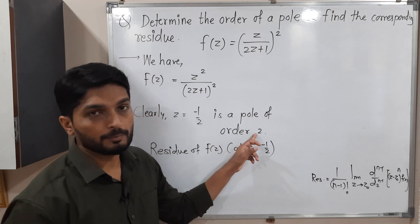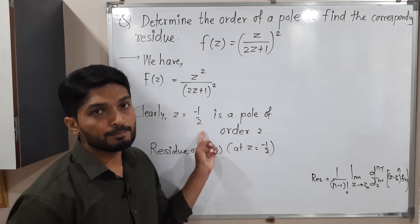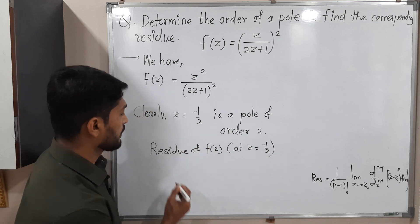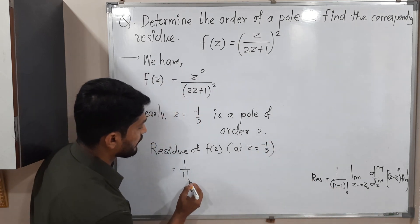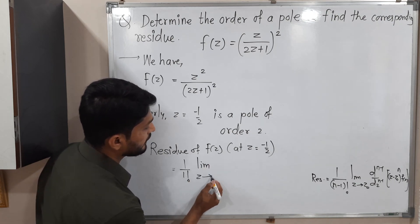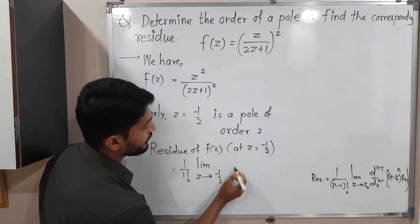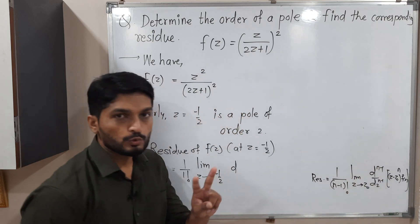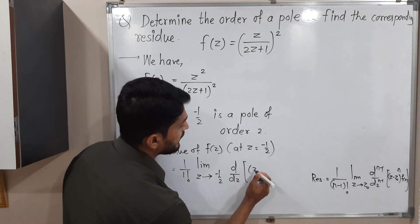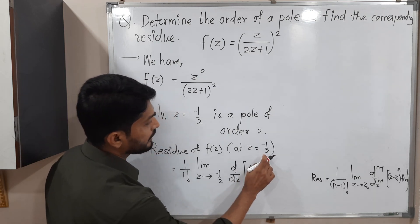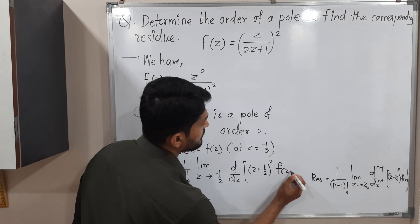So now the question is: what is n? n means its order, so here the value of n is 2, and z₀ is our pole, which is −1/2. Let us put the values into the formula: 1/(2−1)! = 1/1!, the limit as z tends to −1/2, with the (2−1) = 1st derivative of (z − (−1/2))² · f(z). Since z naught is −1/2, minus minus gives plus 1/2: so it's (z + 1/2) squared times f(z).